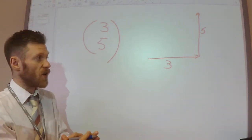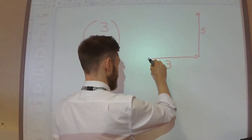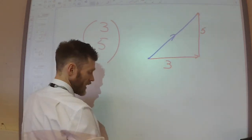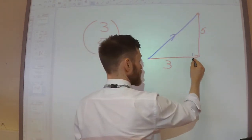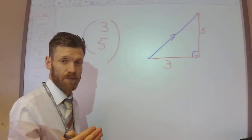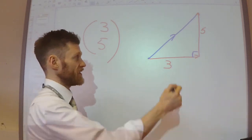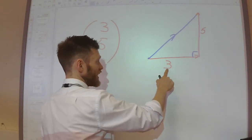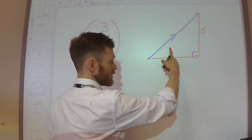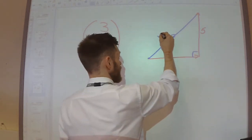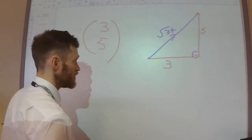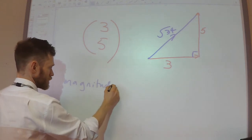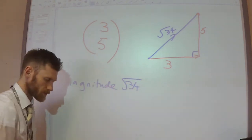The overall result is that I started here and end up there. What you can see is we have a right-angled triangle. When we talk about the magnitude, we're talking about what's the overall size of this line. So it's a quick bit of Pythagoras: 3 squared plus 5 squared, so 9 plus 25 is 34, square root that, and I get root 34. So the magnitude is root 34.